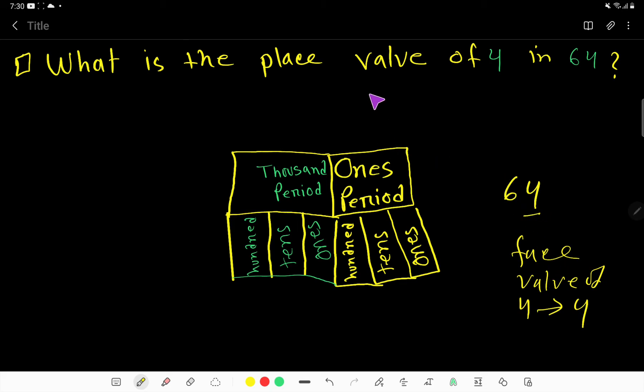In case of finding place value, you have to consider the position of the digit in the number. When you're going to write a number, you have to think about period: ones period, thousands period, then millions period. Every period will have three columns: ones column, tens column, and hundreds column.